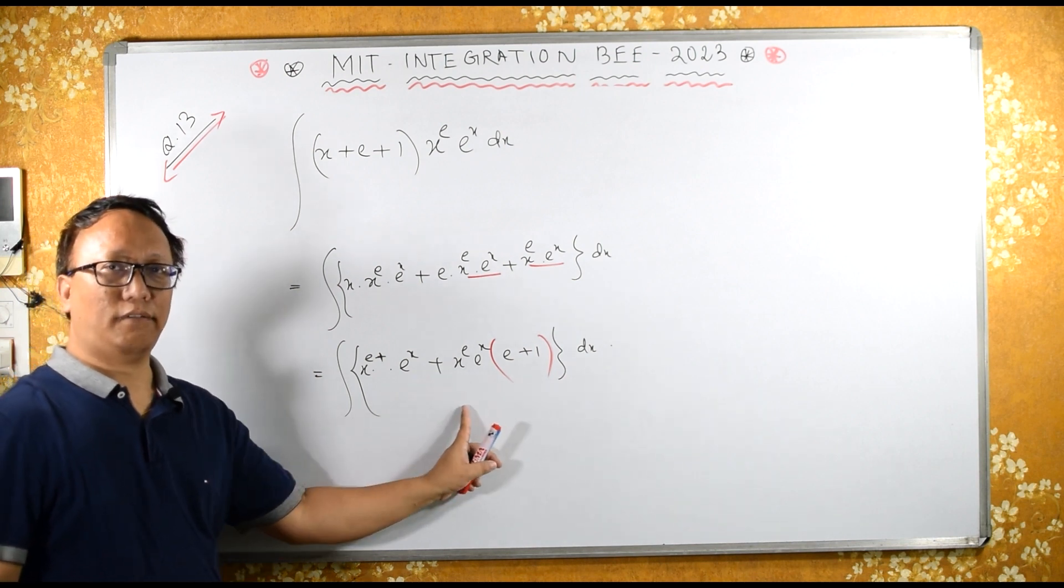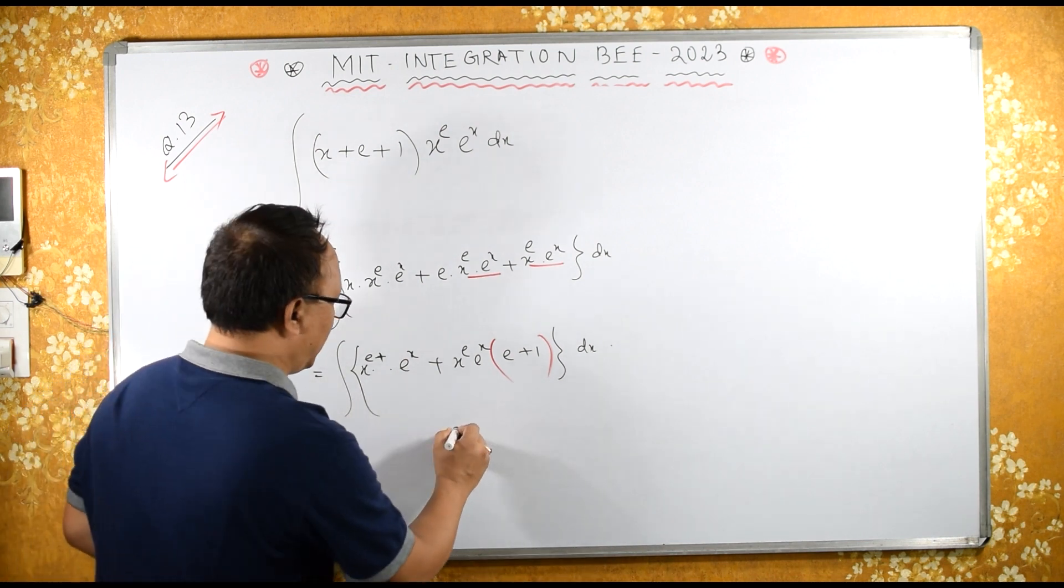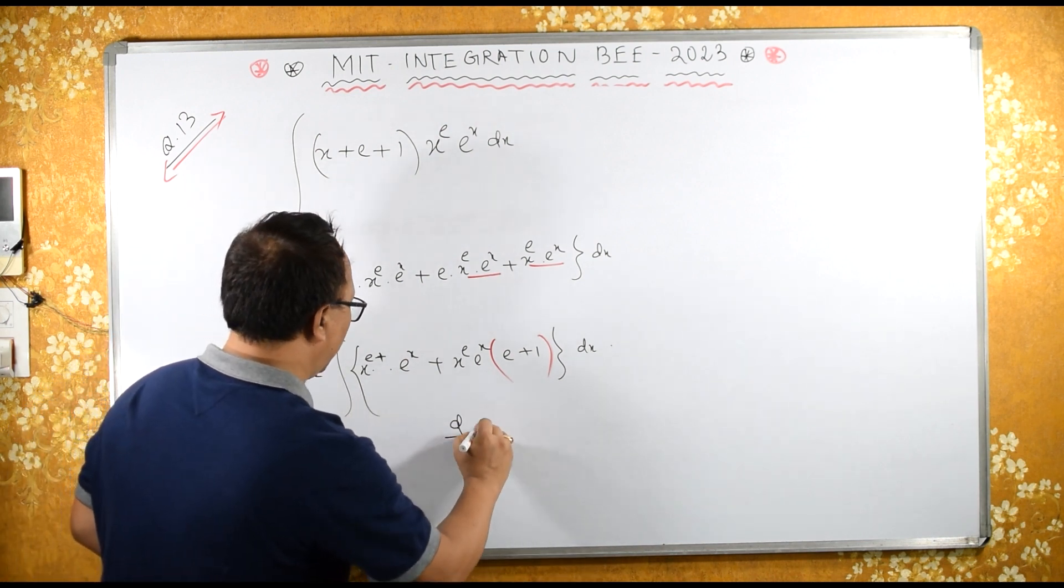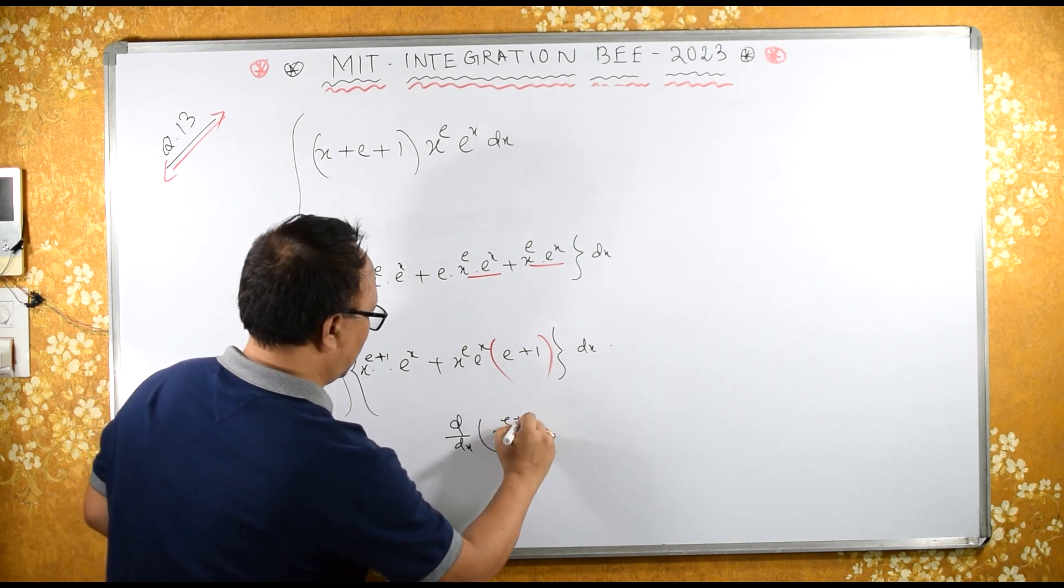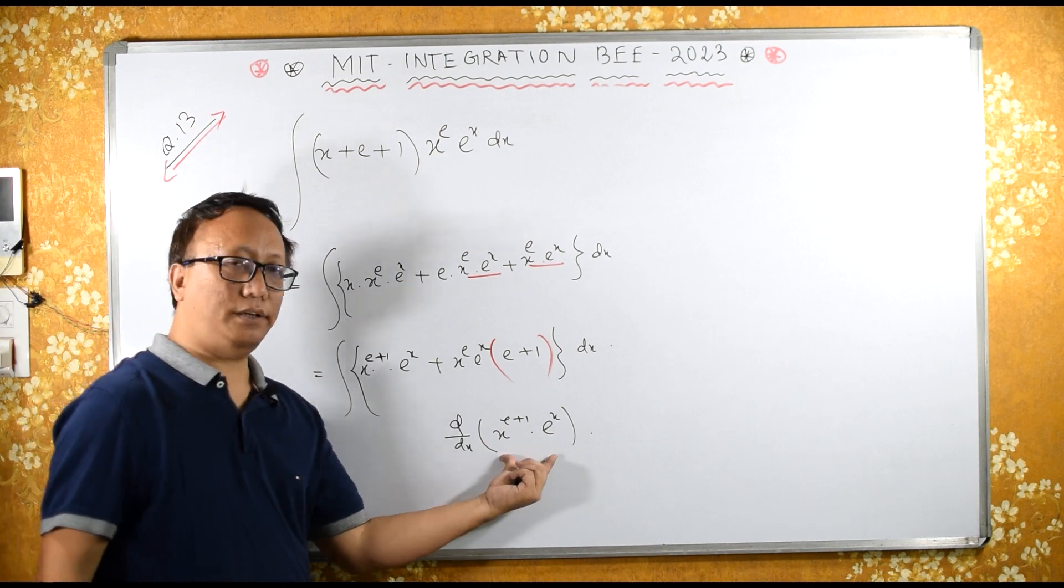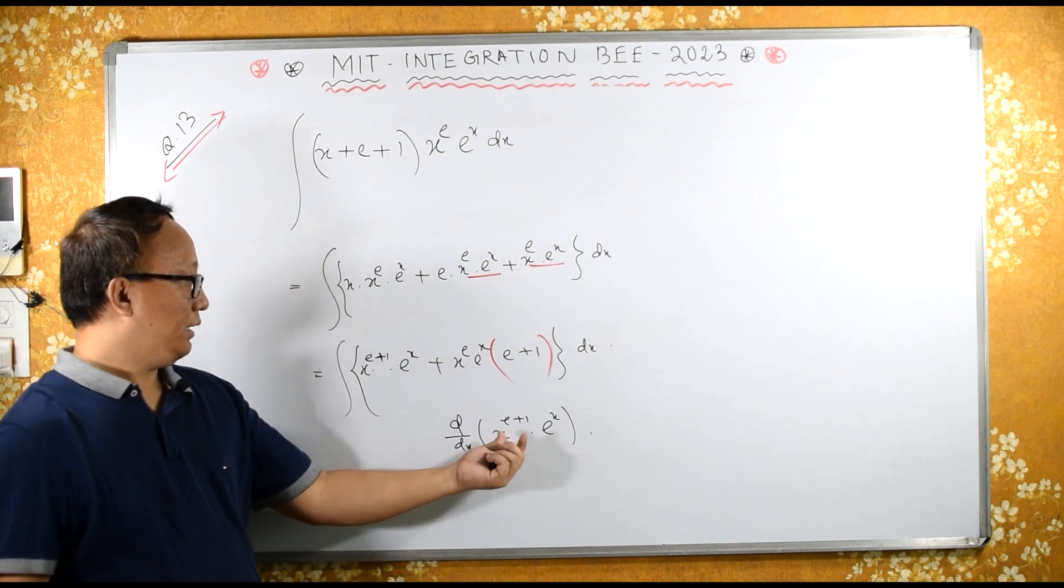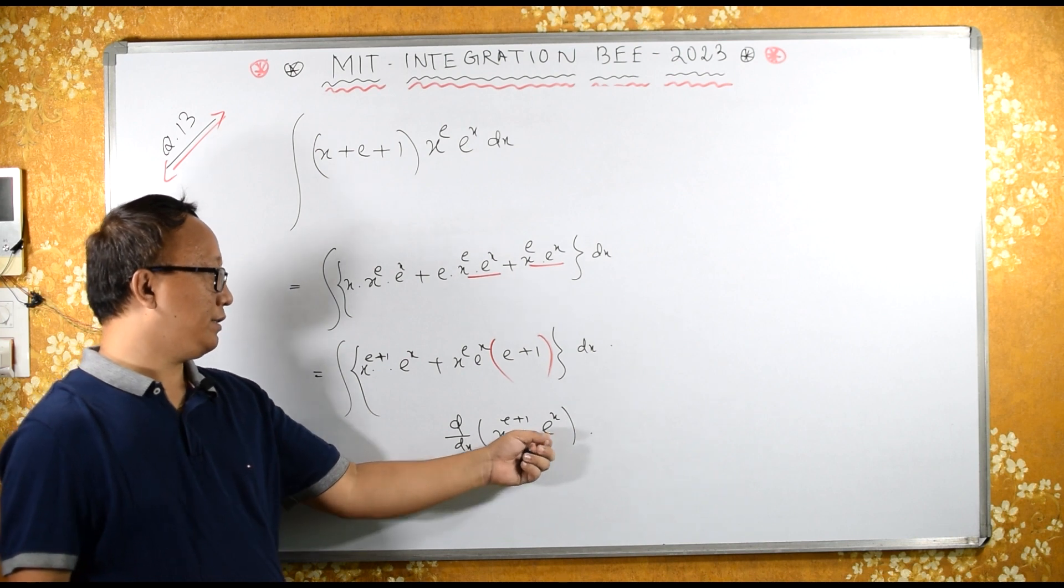Look at d/dx of x raise to e plus 1 into e raise to x. What is this? Now apply product rule u into v - keep x raise to e plus 1 as it is, differentiation of e raise to x is e raise to x.